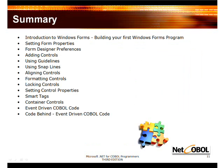As usual, we've covered a lot of ground in this introductory lesson for Windows Forms. We talked about setting form properties and designer preferences, adding controls using gridlines and snaplines, aligning and formatting controls, locking controls, and setting properties. We also took a look at smart tags, container controls, event-driven COBOL code, and the code-behind code that's generated by the Windows Form Designer. Let's go on to the next lesson.